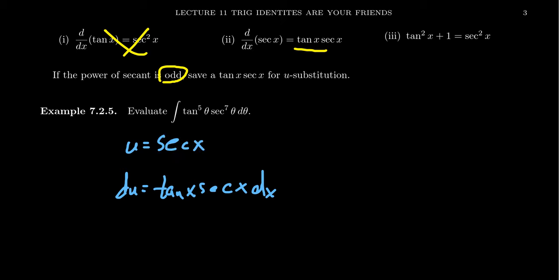What would happen in the previous situation? Let's break it up into smaller pieces. The tangent to the fifth secant to the seventh. What we're going to do is we're going to borrow one of the tangents and one of the secants. So we get tangent to the fourth theta, secant to the sixth theta, and then we have this tangent theta secant theta d theta right here.